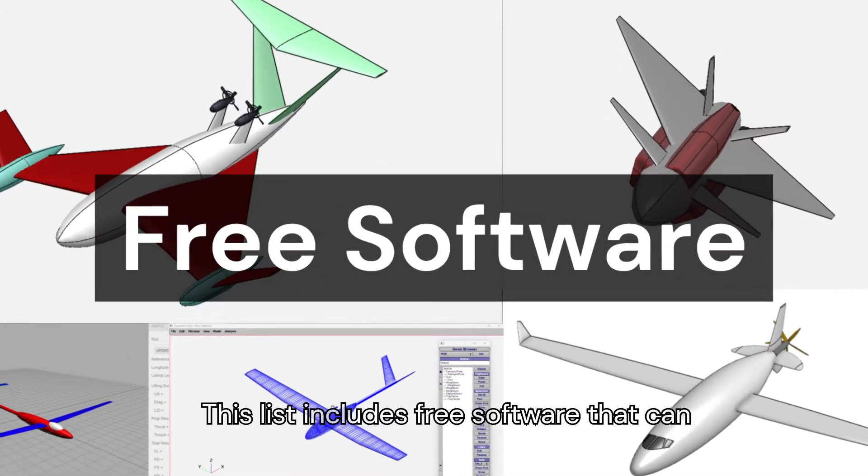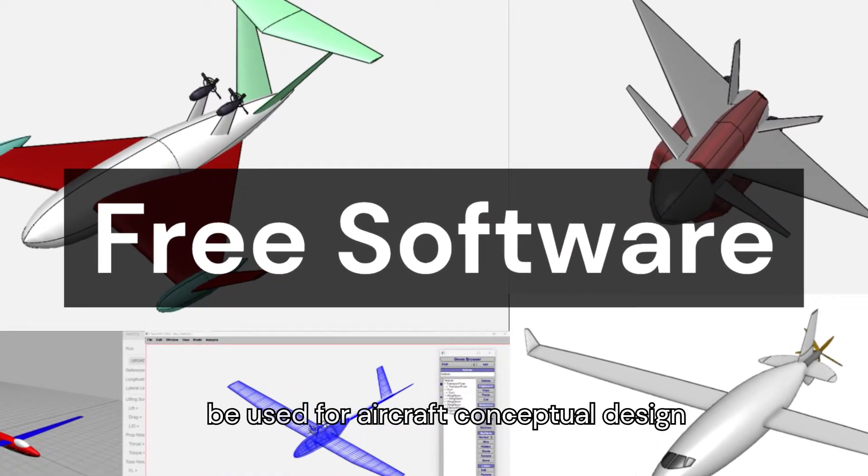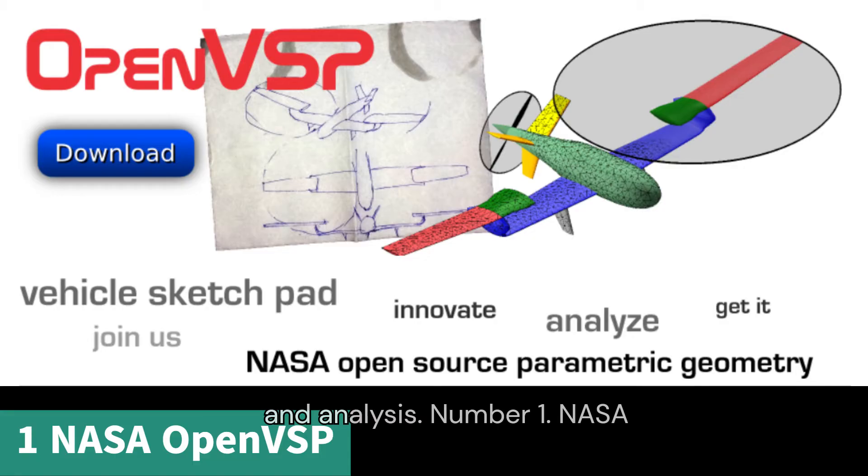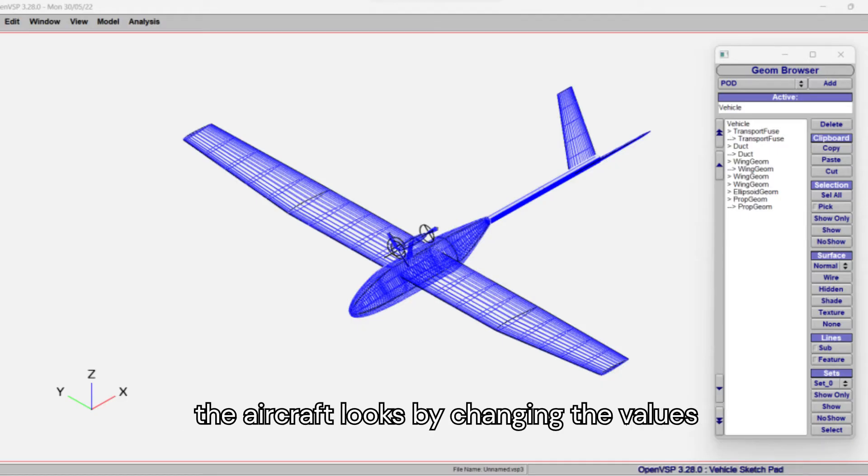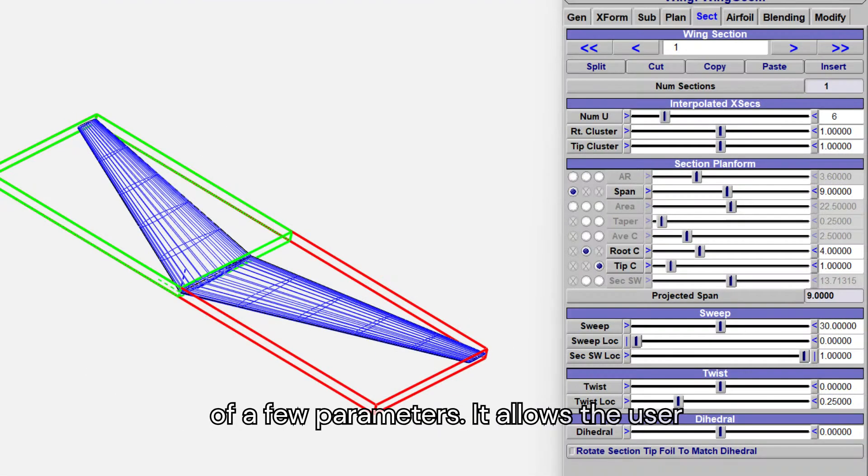This list includes free software that can be used for aircraft conceptual design and analysis. Number 1: NASA OpenVSP is a parametric aircraft geometry tool, meaning you can change how the aircraft looks by changing the values of a few parameters.